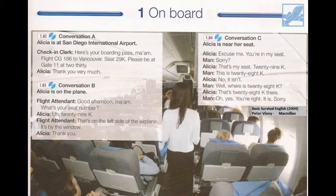1.3, Conversation B. Good afternoon, ma'am. What's your seat number? 29K. That's on the left side of the airplane. It's by the window. Thank you.